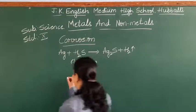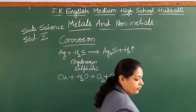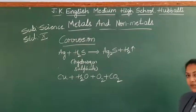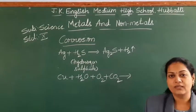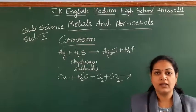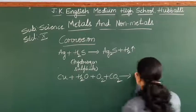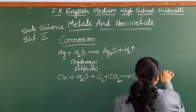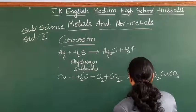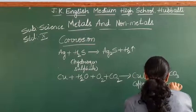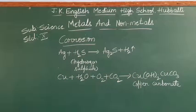Similarly, if you take the example of copper, when it is exposed to the atmosphere and reacts with water, oxygen, and carbon dioxide present in the air, you get a green coating on the copper. That green coating is nothing but copper carbonate. You will find this green coating on copper articles over a long time, and that is called corrosion of the metals.